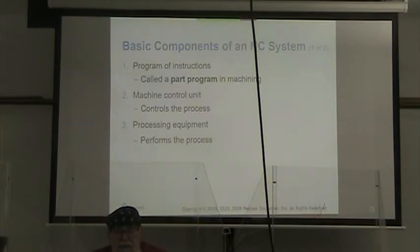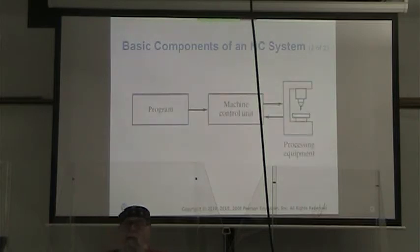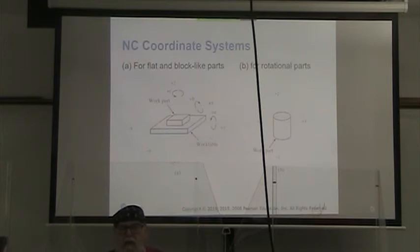The basic components of our numerical control system, we have to have a program of instructions, which is called a part program in machine. A machine control unit controlling the process, and our processing equipment that performs the process. This shows their relationship to each other. The program feeds into the machine control unit, which is linked to the processing equipment, and is communicating back and forth with that.